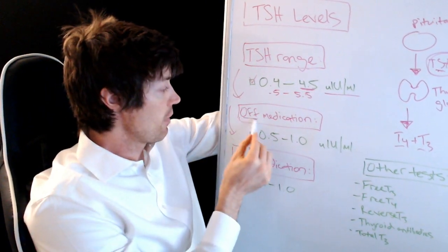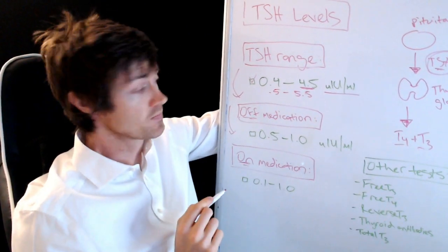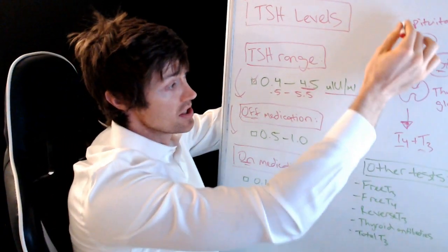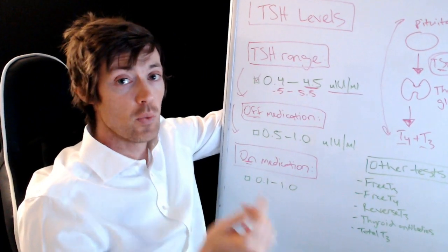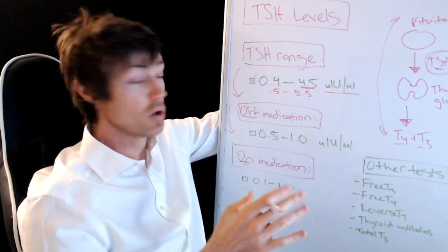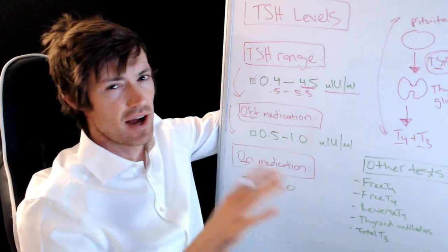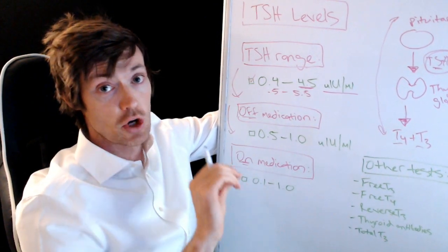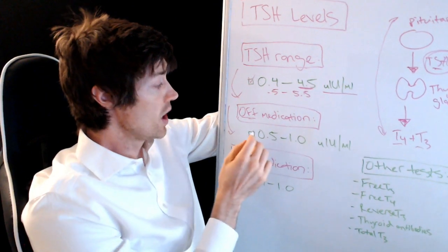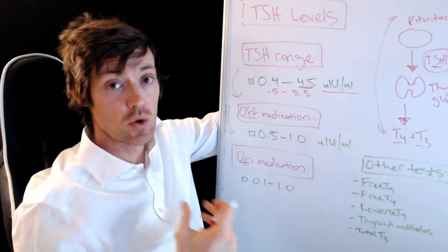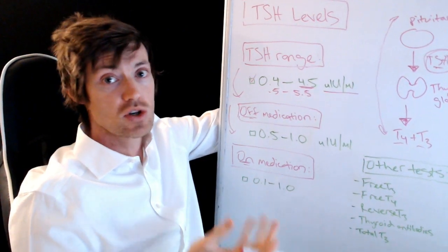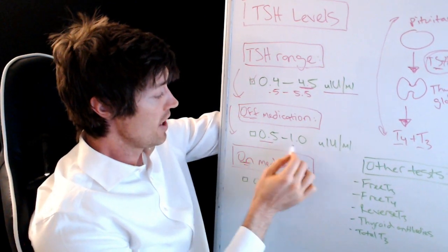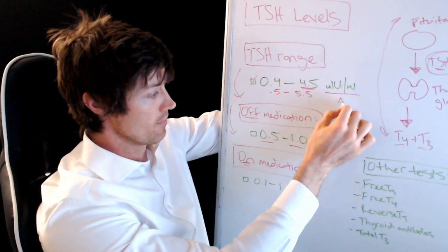Okay, so now that you understand this, so this is the broad range produced by the lab, we need to talk about where you want to live. Where do you want your TSH to be? And we need to break that up into two separate categories. The first is off thyroid medication, and the second is on thyroid medication. Okay, because this is very important. Once you start taking thyroid medication, it manipulates and tweaks this whole system.